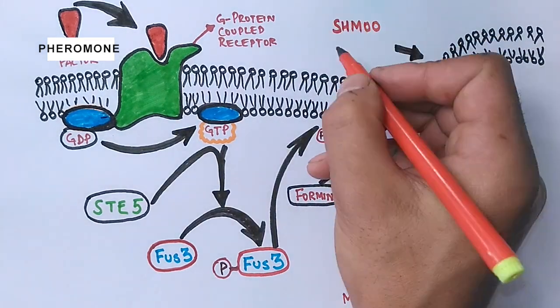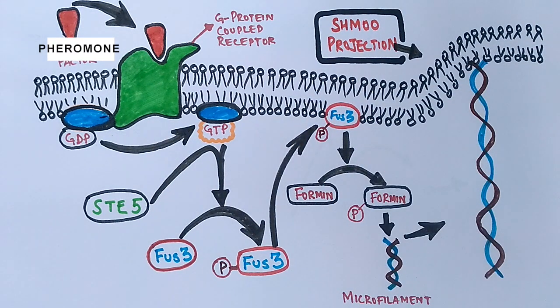This is how the signaling pathway, the cascade of signals, activates a formin protein, and this formin protein acts on microfilaments and adds actin subunits to the growing microfilament chain, and we ultimately get the shmoo projections in the yeast cell.